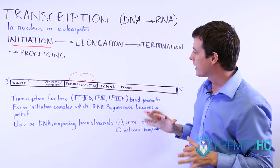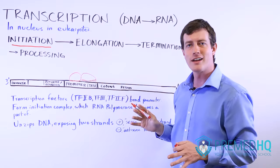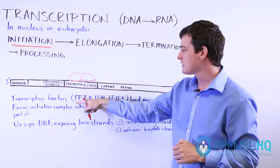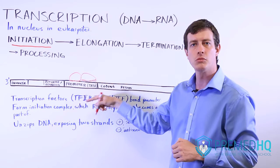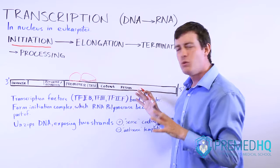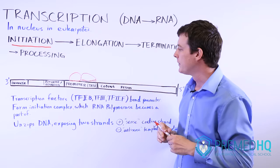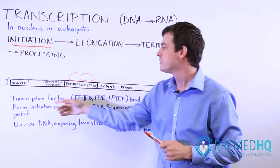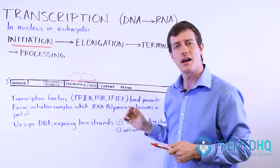And the transcription factors are usually quite easy to recognize because they are named TF something. Usually it's TF2, the roman numeral 2, and some letter. And there are several of them that you won't be explicitly tested on on your MCAT exam. But if you see TF, that's a transcription factor, also known as a transcription initiation factor.